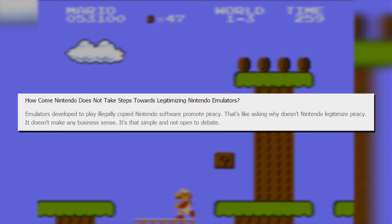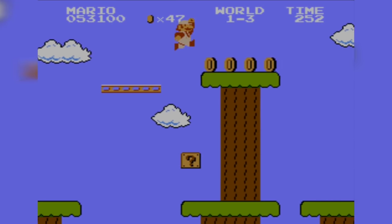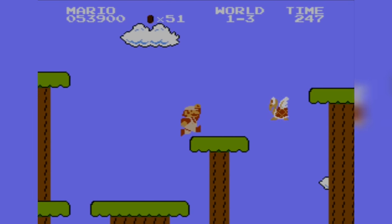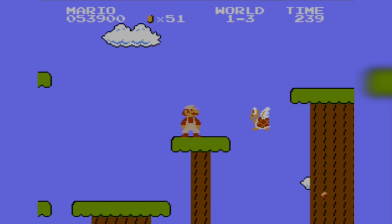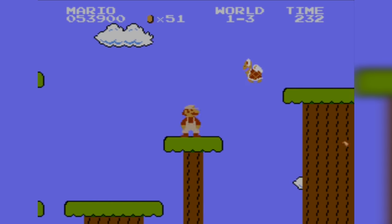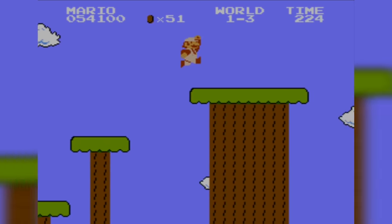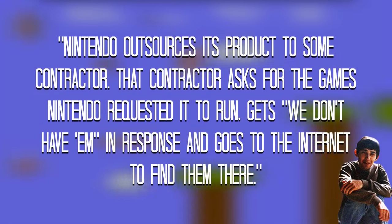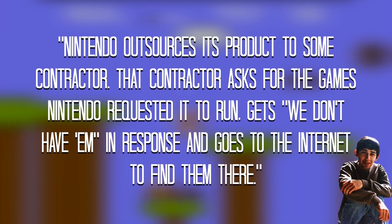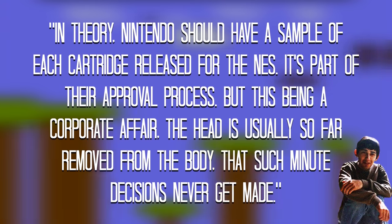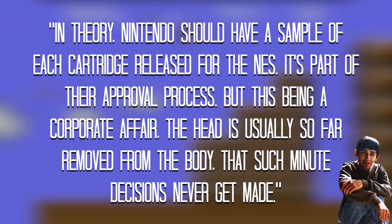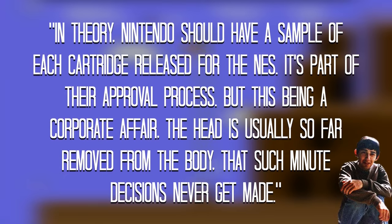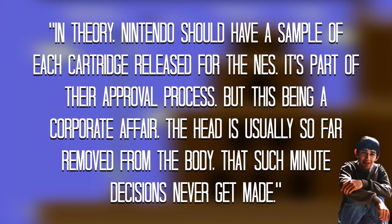They're going to say it doesn't make any business sense and it's not open to debate, which is a frustrating sentence to read because every sign here points towards Super Mario Bros. on the Wii Virtual Console being a ROM that they sourced online. I asked Fazulin if he could speculate as to what may have happened here, and he came up with the following possibility: Nintendo outsources its product to some contractor. That contractor asks for the games Nintendo requested it to run, gets "We Don't Have Them" in response, and goes to the internet to find them there. In theory, Nintendo should have a sample of each cartridge released for the NES as part of their approval process. But this being a corporate affair, the head is usually so far removed from the body that such minute decisions never get made. Which is an amazing thought, because this isn't some obscure title we're talking about — it's Super Mario Bros.